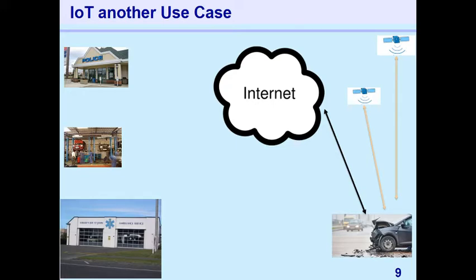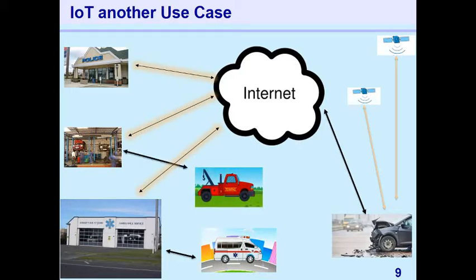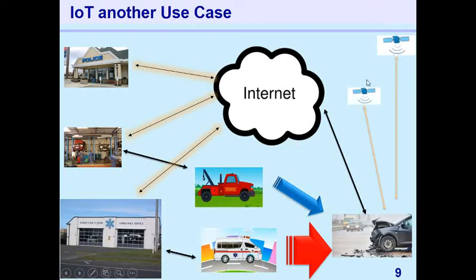Even if the driver is injured and unconscious, this will happen automatically. The police, the service mechanic, and the ambulance service center all receive information about the accident and the correct location of the car. The mechanic sends a towing truck to clear the road. Whether the driver is conscious or not, all required services are automatically deployed through the internet. This is another classic example of IoT.